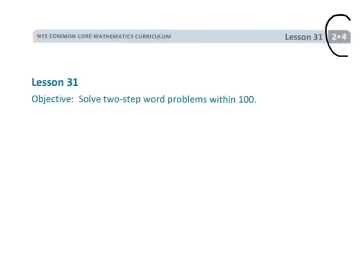All right, this is grade 2, module 4, lesson 31. In this lesson, students are going to be solving two-step word problems. Now, fortunately, they're making it within 100.